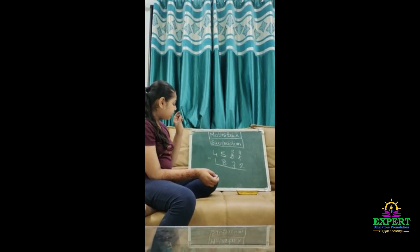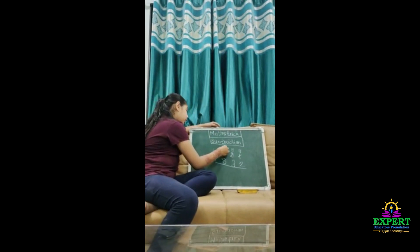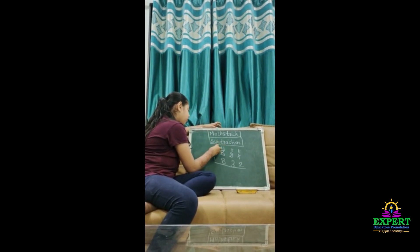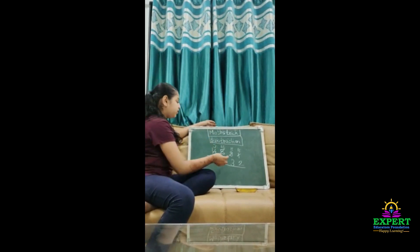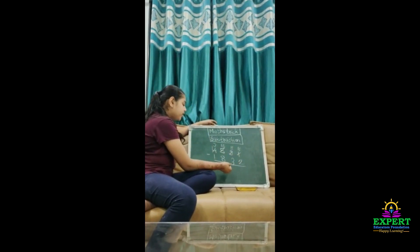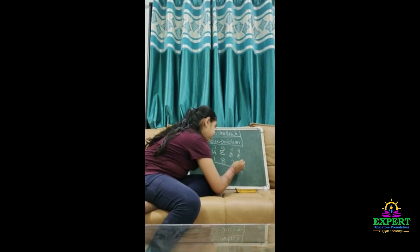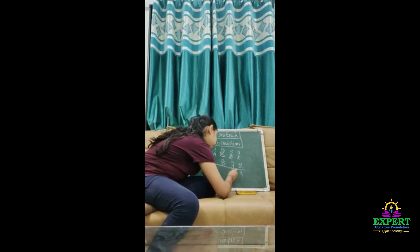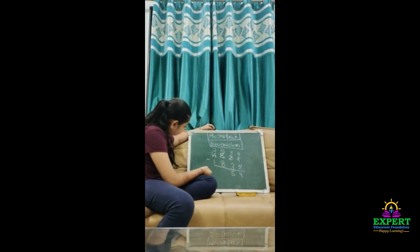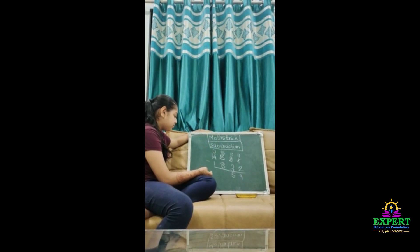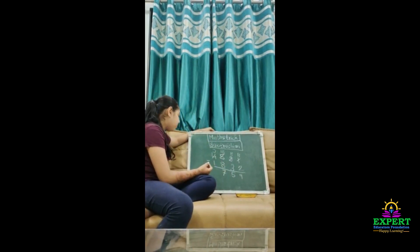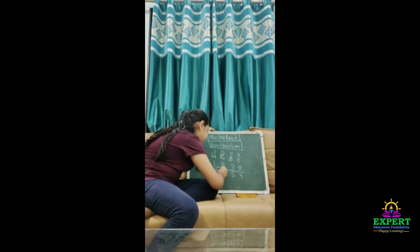And then 5 minus 8 will not be possible. Then what to do? We have to borrow the number again. So we have added 1, and 4 will become 3. So 11 minus 2 is 9, 8 minus 3 is 5, 15 minus 8 is 7, and 3 minus 1 is 2. So this is our answer.